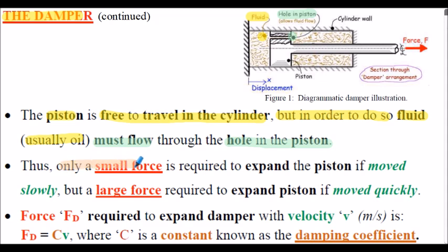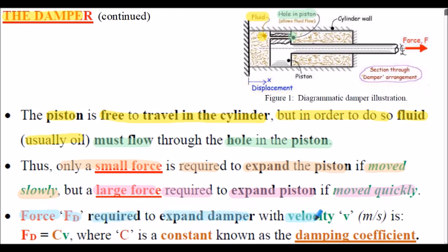Thus, only a small force is required to move the piston if it moves slowly, but a large force is required if it's moved quickly. The damping force, denoted as Fd, is required to expand the damper with velocity V. It's given by Fd equals C multiplied by V, where C is a constant known as the damping coefficient.